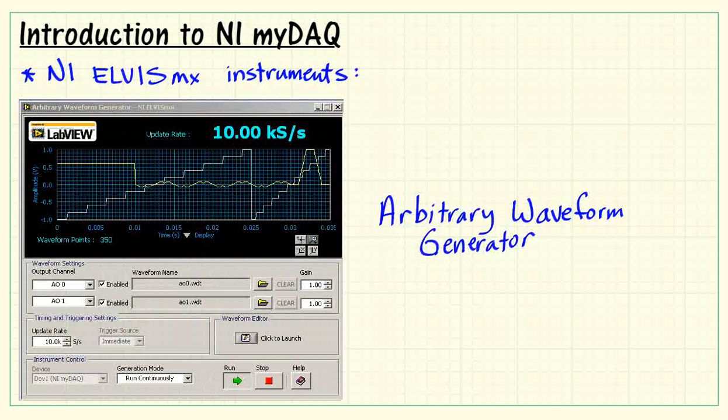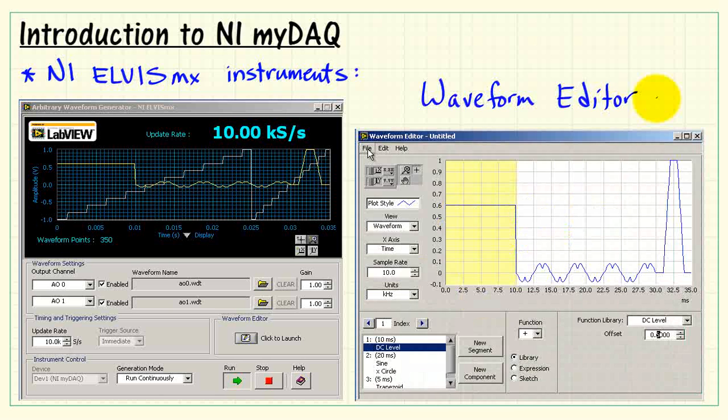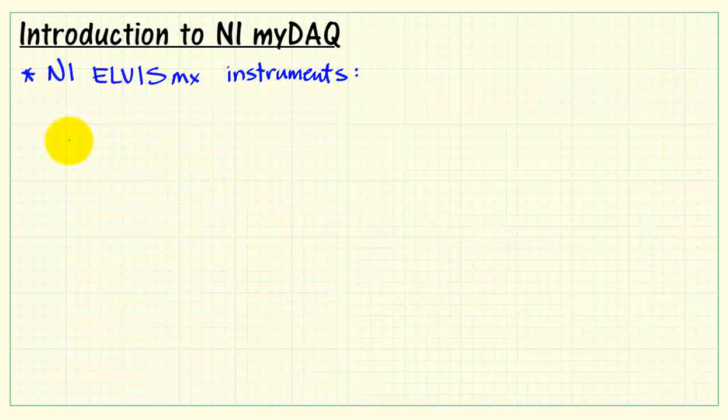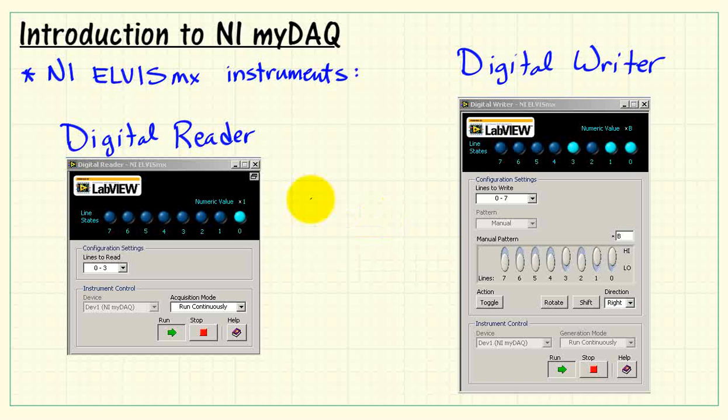Some other instruments available include the arbitrary waveform generator. You can load up a waveform pattern from a file and then produce this as a periodic waveform. You also have a waveform editor making it very convenient to create either simple or very complicated wave shapes that you might need. In terms of the digital outputs and inputs, we have something for reading the state of the digital inputs or setting the state of the output lines.